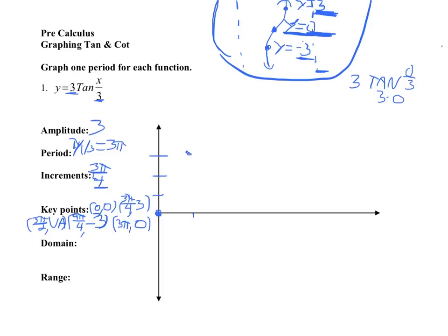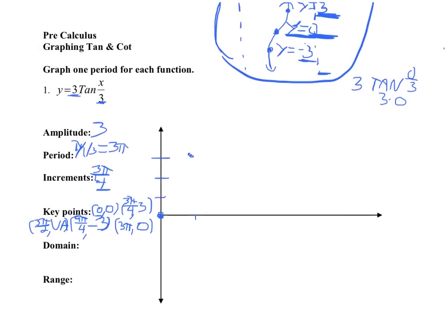Okay, then at three pi over two, I'll say this is three pi over two right here. This is a VA. So I'll put that right there. And then nine pi over four, we're down at negative three. So we'll go down to this point. Then at three pi, we'll say this is right here. We're at zero.